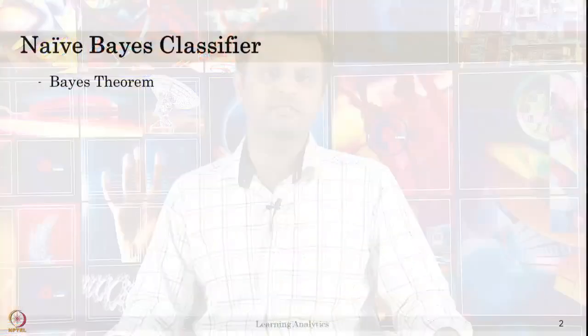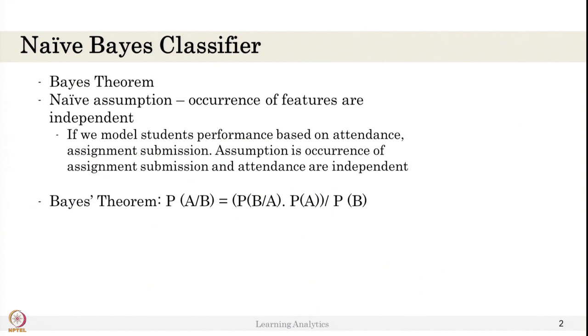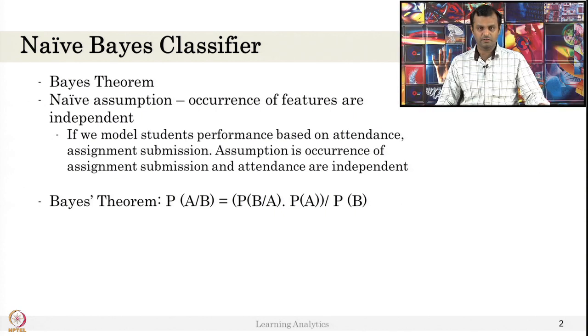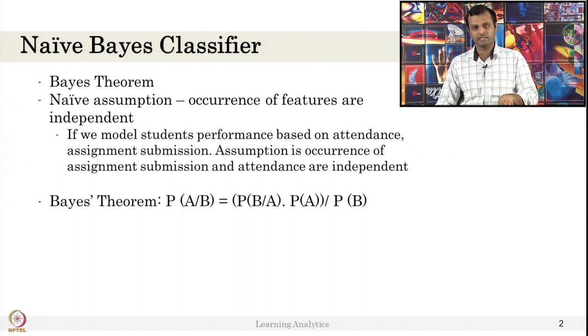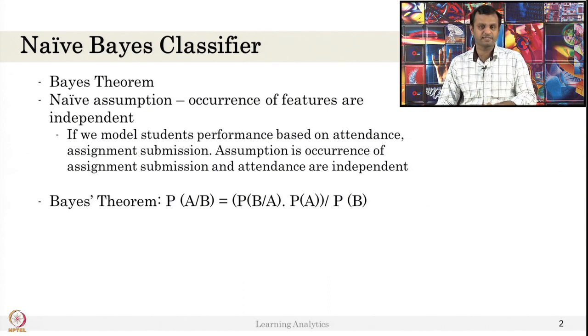In this video, we will discuss the Naive Bayes classifier. What is the Naive Bayes classifier? It is based on the Bayes theorem, which we saw in the last class. It has a naive assumption that the features are independent, but all are related to the dependent variable. So x1 is dependent on y, x2 is dependent on y, but x1 and x2 are independent events — that is the idea.